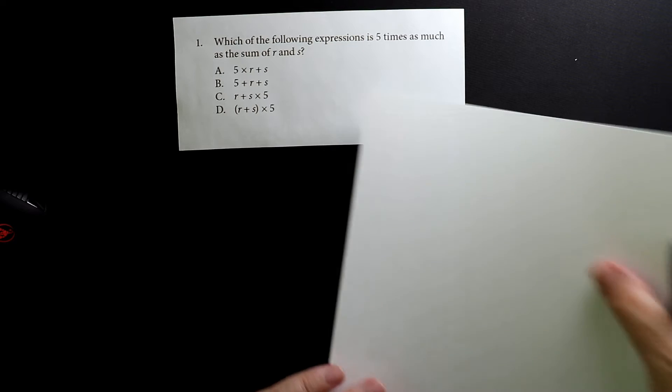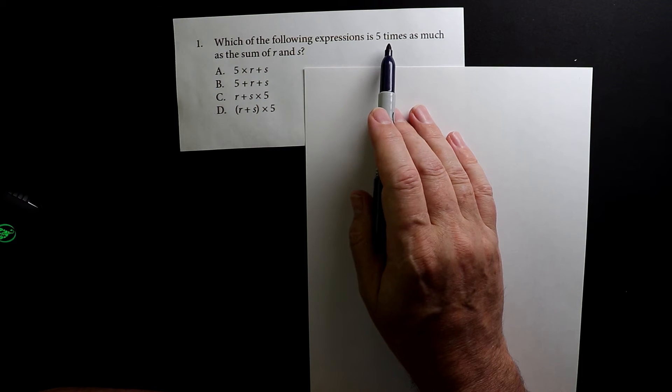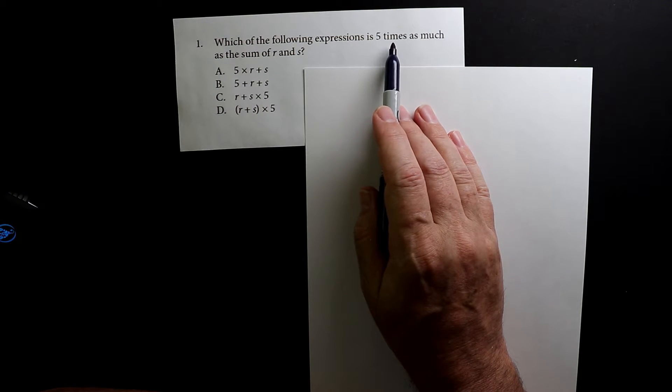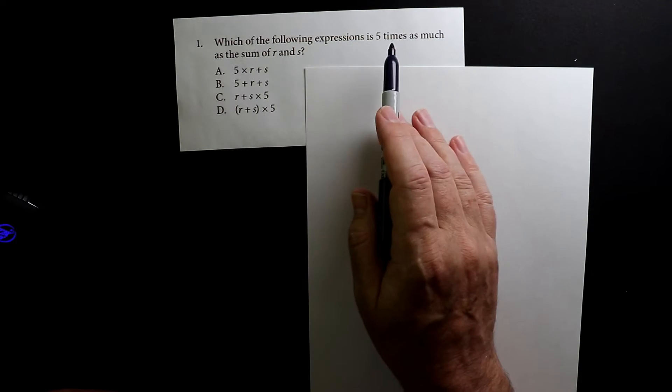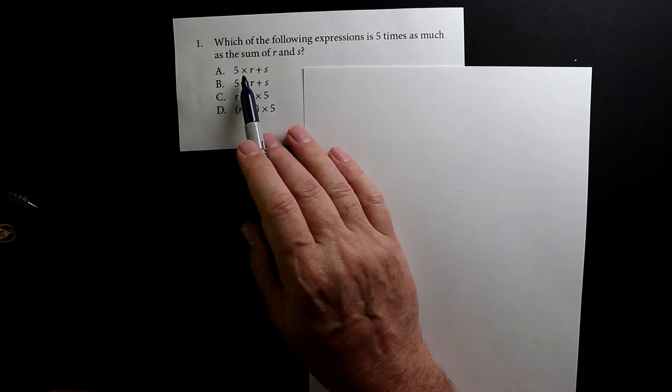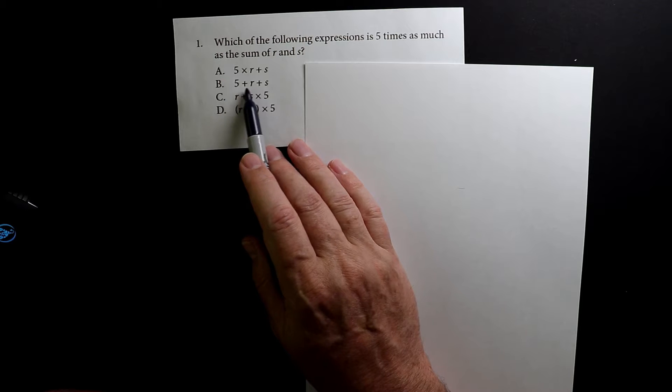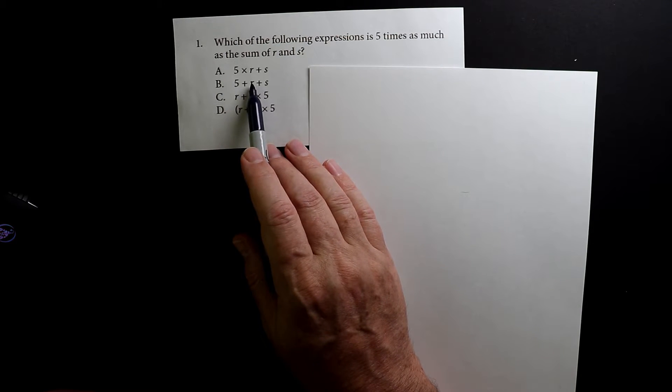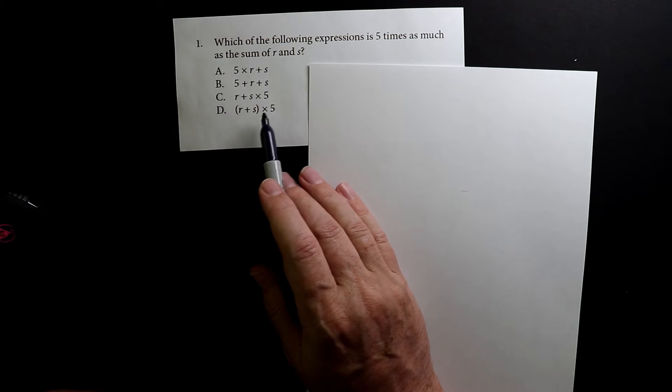For this one, it's pretty straightforward. Which of the following expressions is five times as much as the sum of r and s? We're dealing with multiplication and addition. There's no multiplication here, so we know right away that this one is not going to be the answer. Then we have multiplication and addition, and addition and some multiplication.